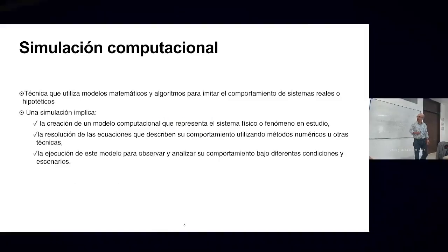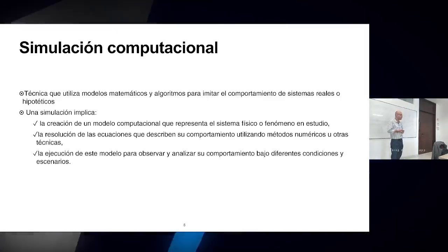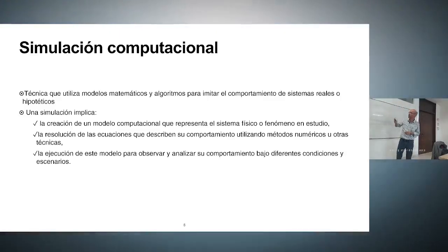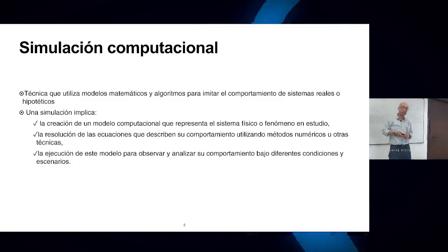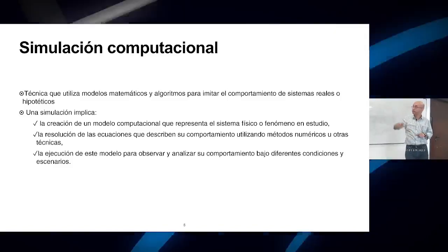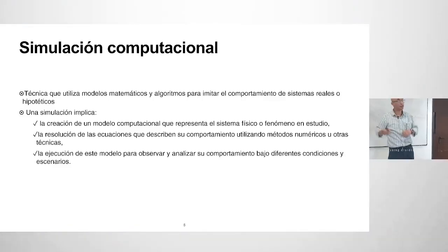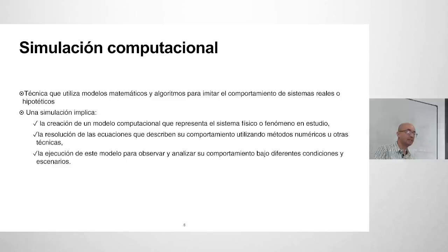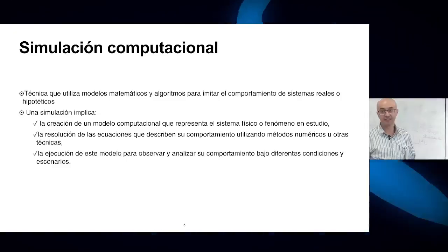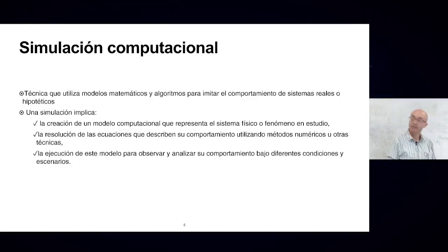The first part: a computational simulation is simply a technique that uses mathematical models and algorithms to imitate the behavior of real or hypothetical systems. It involves creating a model representing a physical system, solving equations that describe its behavior, and executing the model to observe and learn about that system.